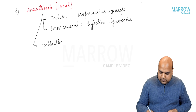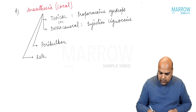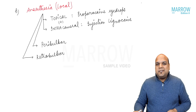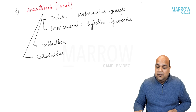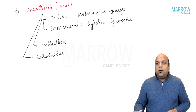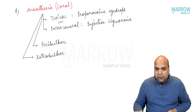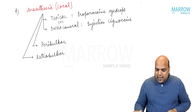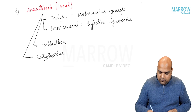You can also do peribulbar anesthesia or retrobulbar anesthesia. If you are not aware of these names, please watch the videos on basic anatomy of the eye where I have discussed all routes of ocular drug administration. Peribulbar means around the eye and retrobulbar means behind the eye. Retrobulbar is not preferred — what is preferred is peribulbar anesthesia.